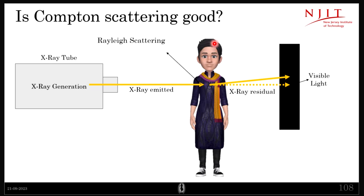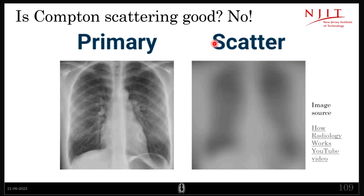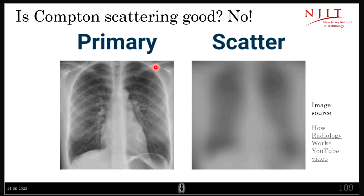Is Compton scattering crude? Definitely. Here is an image showing the primary x-ray versus the x-ray with scatter — you can see it is very blurry and you don't get useful information. In reality, what happens is that at some portions or regions there will be Compton scattering occurring.